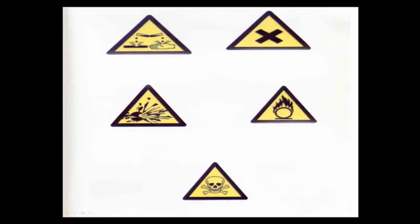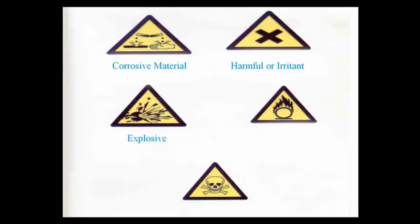And these are some COSHH signs — they are warning signs, yellow triangle. The top left-hand corner is a corrosive material. Top right-hand corner — one you'll see on many domestic chemicals — is harmful or irritant. The left-hand side middle is an explosive material. The right-hand side is an oxidant material. And the straightforward one on the bottom is toxic material.